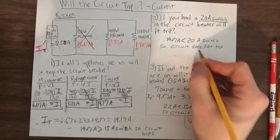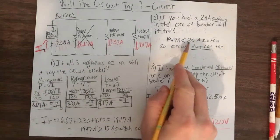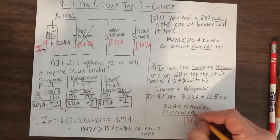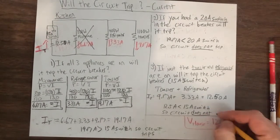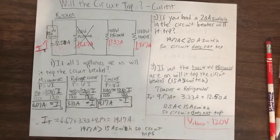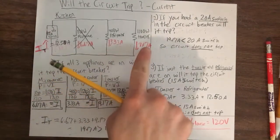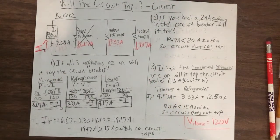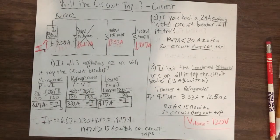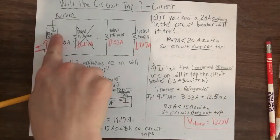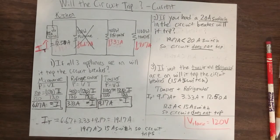So the circuit does not trip — just like 19 amps couldn't go over 20, 12.5 can't go over 15. The general idea is: I can give you any combination of appliances. Just add up the amps from whichever ones are on, and see if they go over the switch number. If you get the total current, look at the switch number, see if it goes over — and that's it. If it goes over, it trips the circuit.